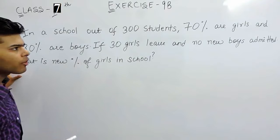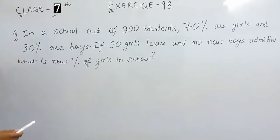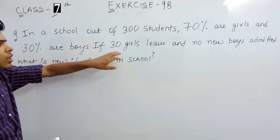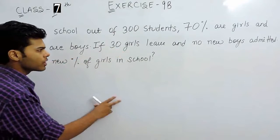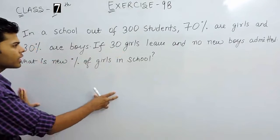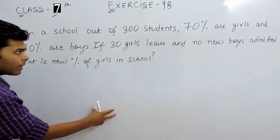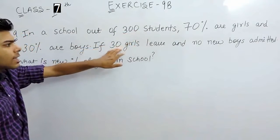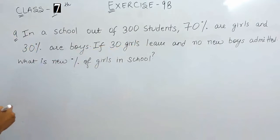First of all we will find the number of girls, that will be 70% of 300. Then we will find the number of boys, that will be 30% of 300. After that from the number of girls we will subtract 30, that will give us the new number of girls. The total will be 270 in the denominator. 70% of 300 minus 30 girls will be in the numerator, and we will multiply it with 100%.